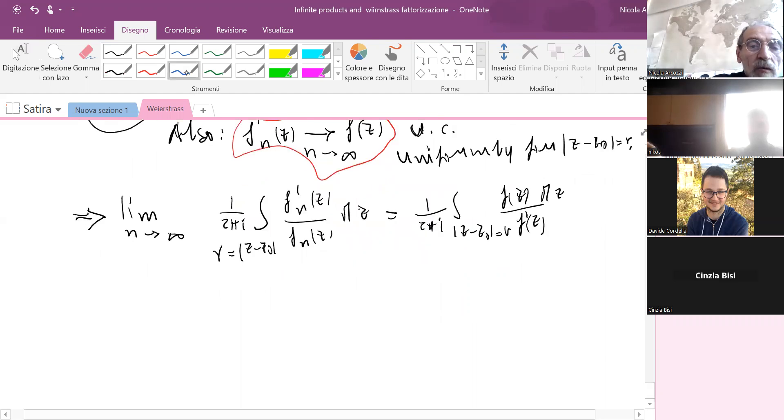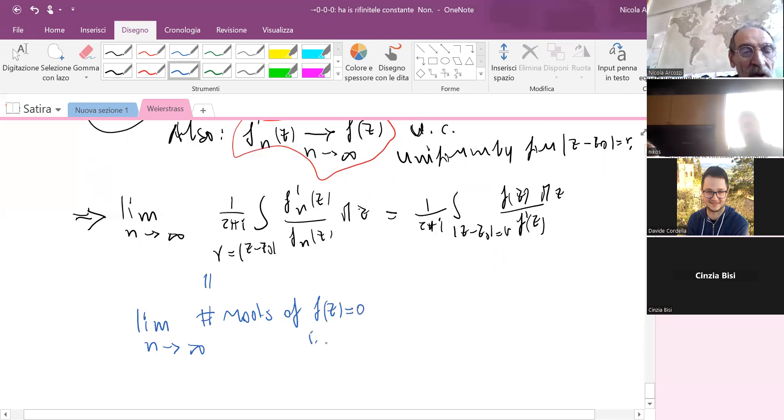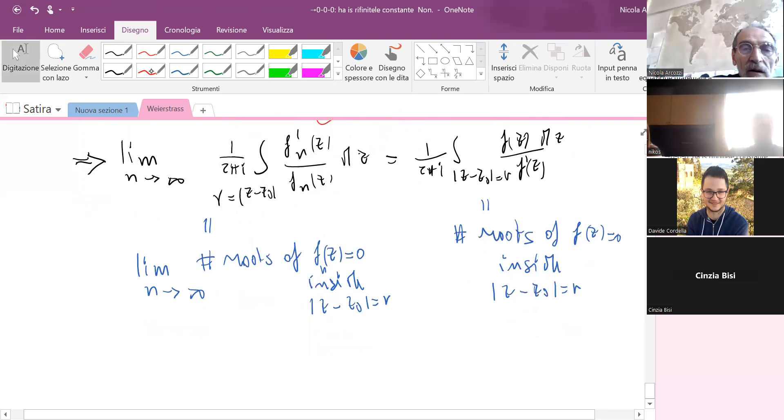But this we know is the number of roots of fn(z) = 0 inside |z - z₀| = r, same thing for f(z) = 0 inside |z - z₀| = r. And our assumption was that that was 0 by hypothesis.